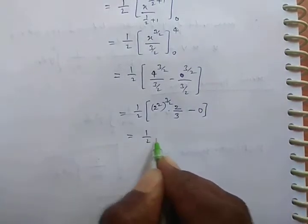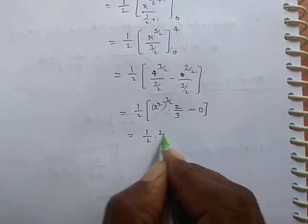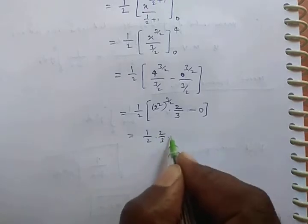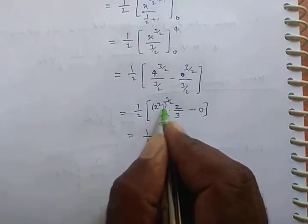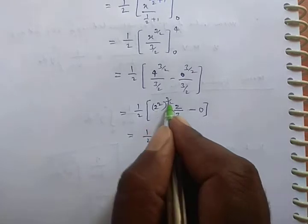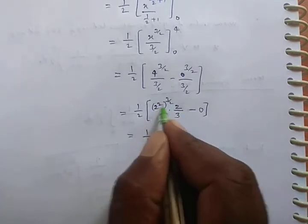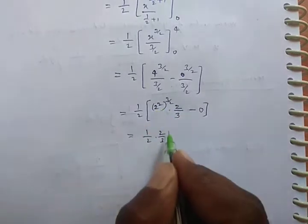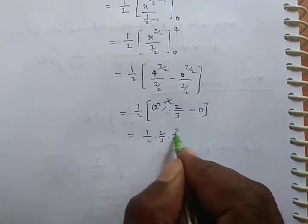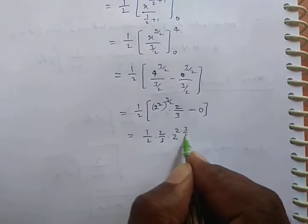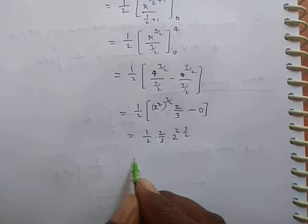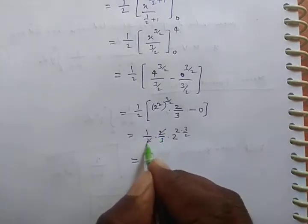Which is equal to 1/2 times 2/3. I want to apply the formula x^m whole power n, which is x^(mn). 2^(2×3/2) equals 2^3.